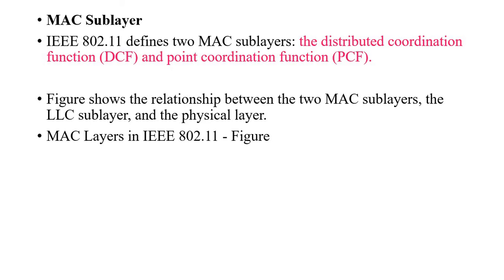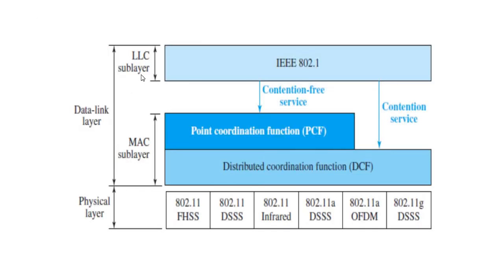IEEE 802.11 has two sublayers for the MAC layer. Its functions are the Distributed Coordination Function and Point Coordination Function. In this figure you can see that Logical Link Control and Media Access Control are the two sublayers belonging to the data link layer. The Media Access Control has two sections: Point Coordination Function and Distributed Coordination Function.